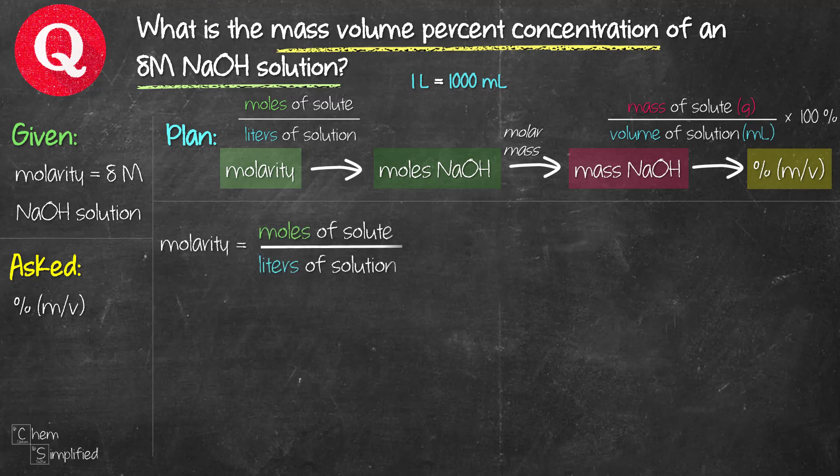So let's start with the first step. Let's go from molarity to moles. Since we're solving for moles, we're going to rearrange the formula. So we have now moles NaOH equals molarity times liter of solution. We can now go ahead and plug in the numbers that we have. So molarity is given here 8 molar. Again, molar is the equivalent of moles over liter. And then liter, we have already made an assumption which is 1 liter.